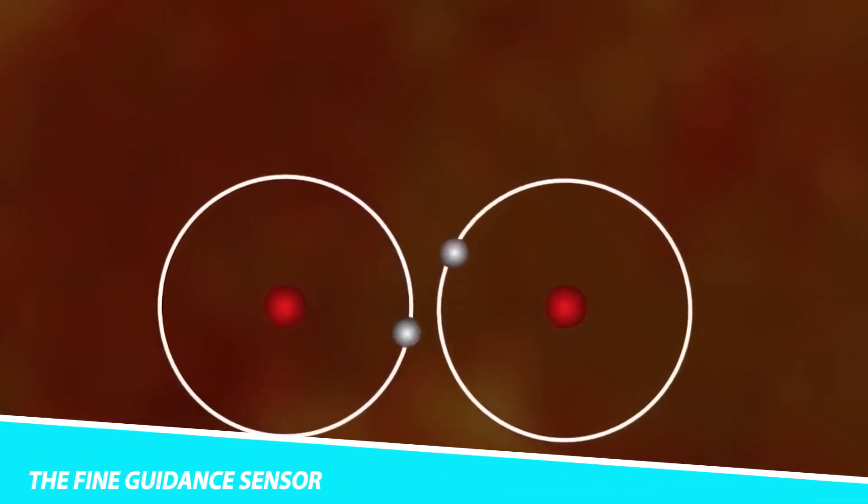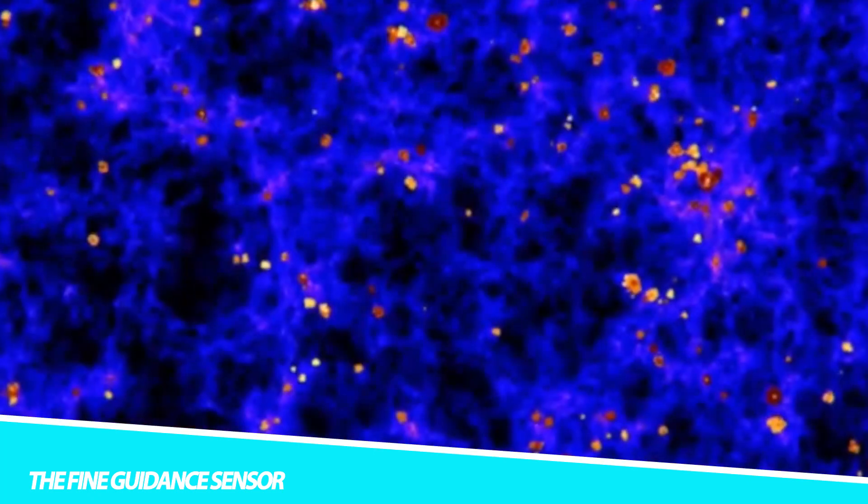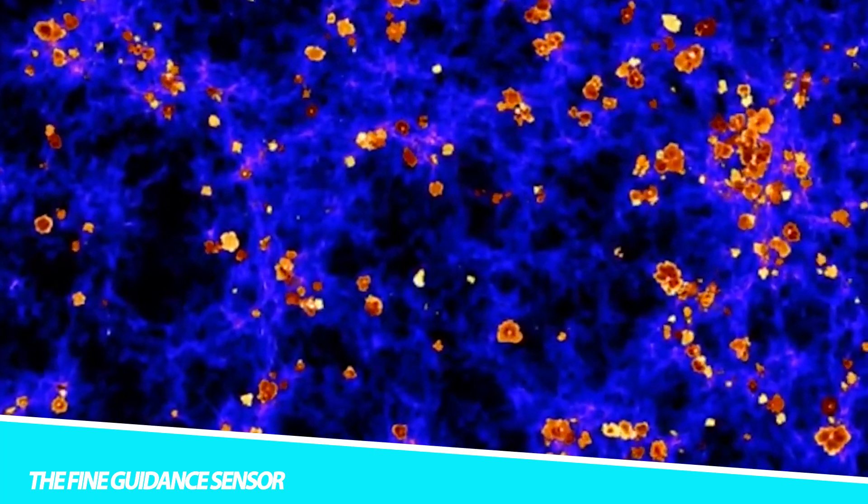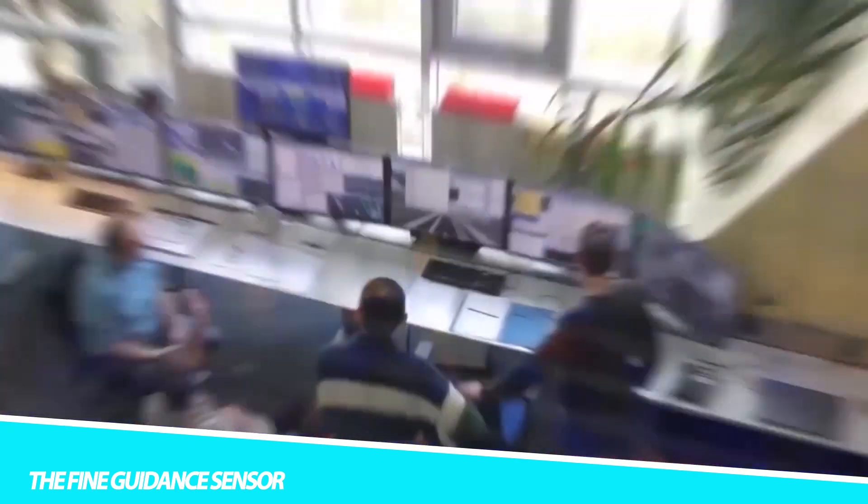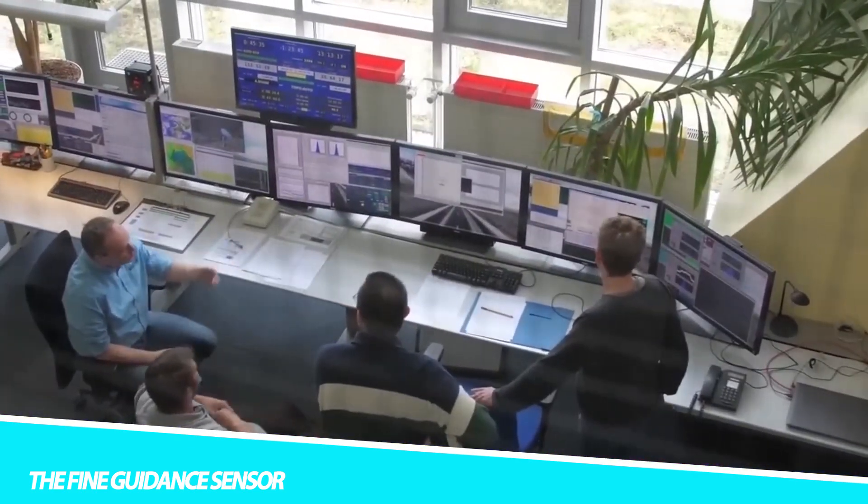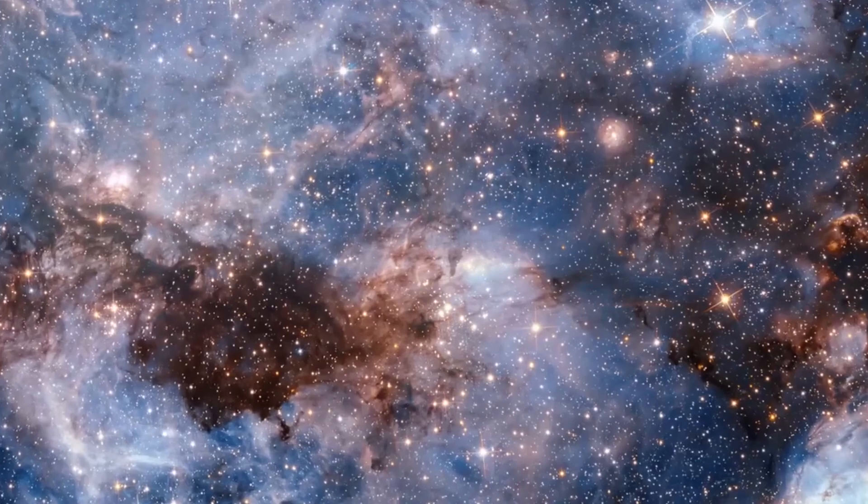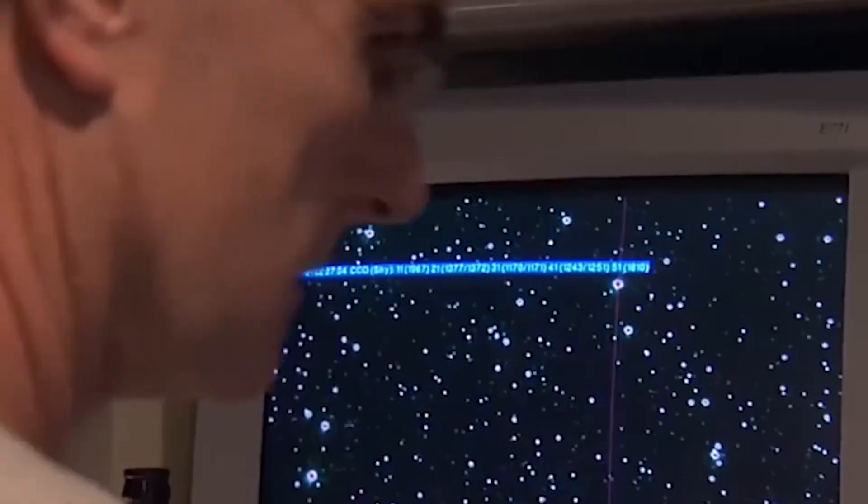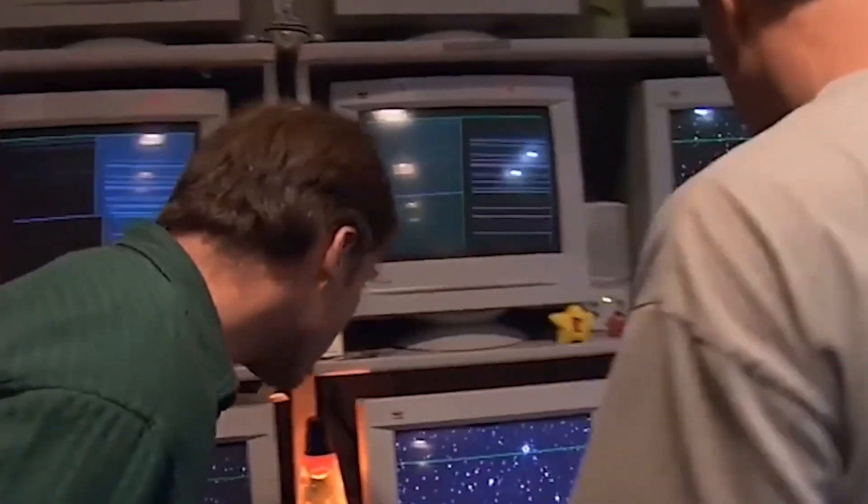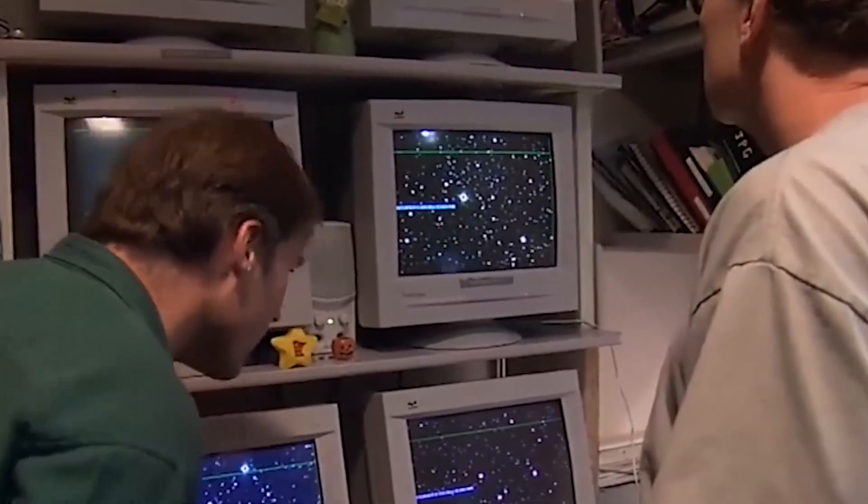The Fine Guidance Sensor/Near Infrared Imager and Slitless Spectrograph, FGS/NIRISS, combines the functions of fine guidance and science observations. It will help in studying exoplanets, probing the atmospheres of distant worlds, and searching for signs of habitability.